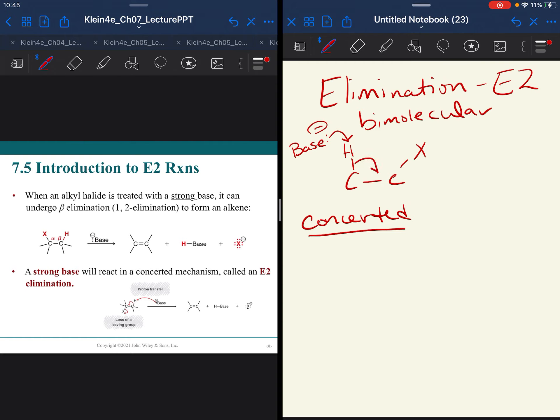these electrons have to go somewhere. So the electrons that were holding the C and H together become your double bond. You can't have five bonds on carbon, so that will push the leaving group off, will push the halogen off.